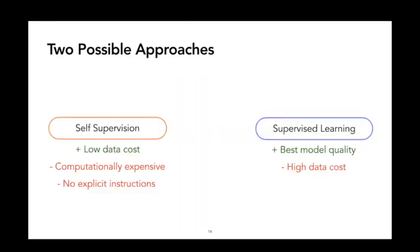So we have two possible choices: self-supervision and supervised learning. Both have their pros and cons. While self-supervision has low data cost — meaning we don't have to annotate data — it is computationally expensive and provides no explicit instructions. On the other hand, supervised learning approaches like instruction tuning can create high-quality models, but collecting training data is incredibly expensive in specialized domains. This begs the question: is there a middle ground? Can we get the best of these two approaches?